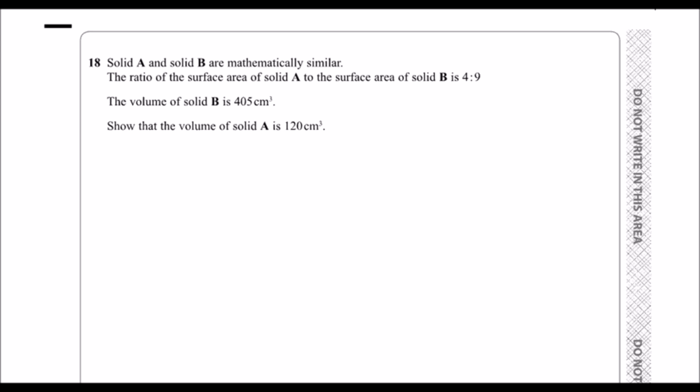Okay, solid A and solid B are mathematically similar. The ratio of surface area of solid A to the area of solid B is 4 to 9. So we've got A to B, 4 to 9, and this is our scale factor for area.